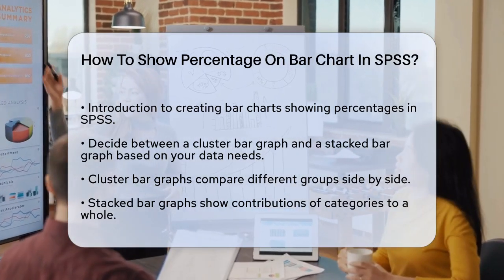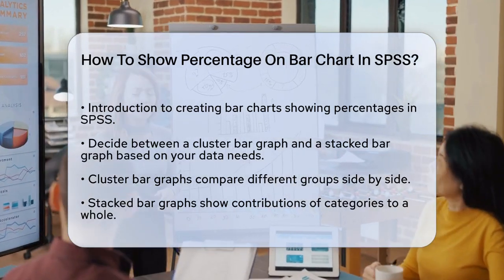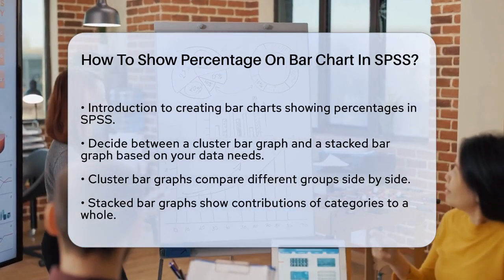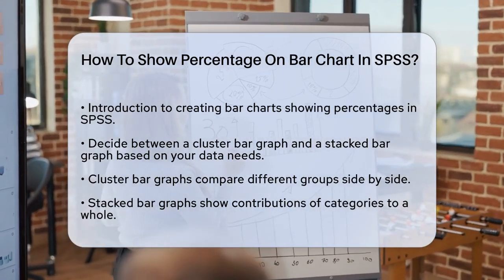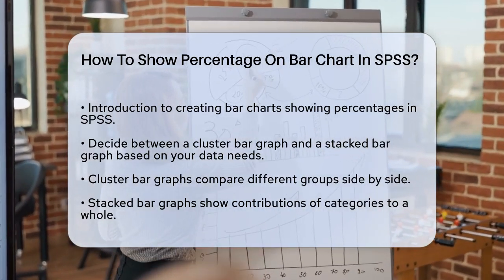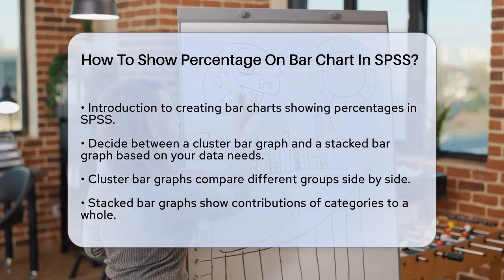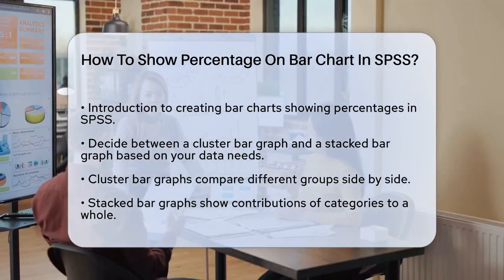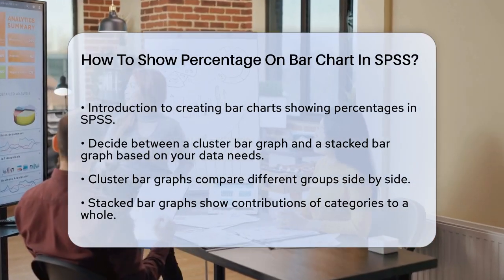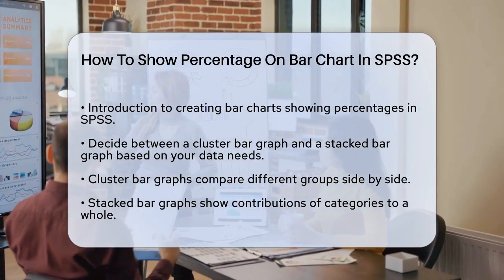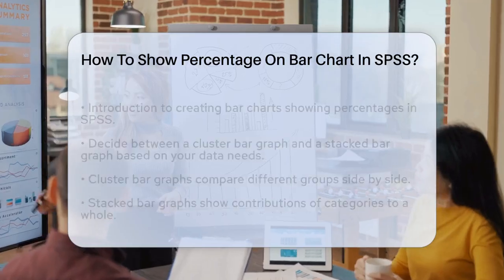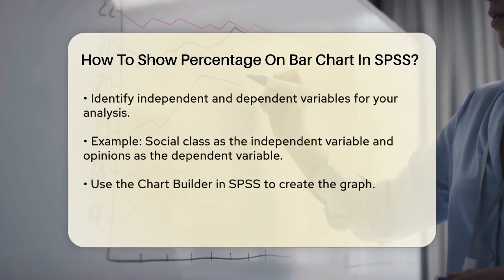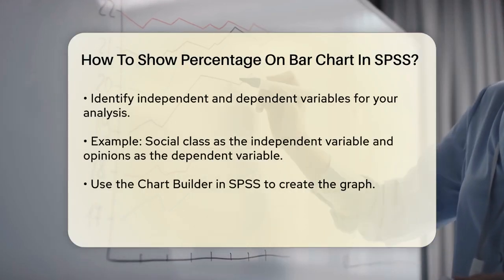Let's start with a cluster bar graph. To create one, you need to identify your independent and dependent variables. For example, if you're studying how people from different social classes feel about a particular issue, your independent variable could be the social class, and your dependent variable could be their opinions.